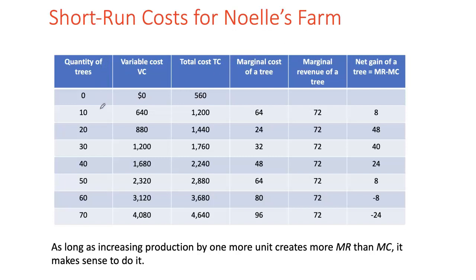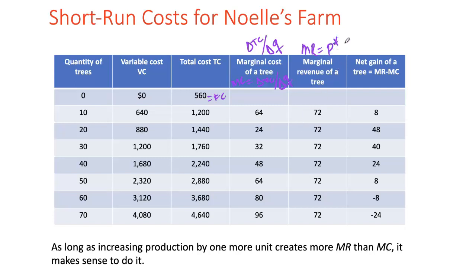Some columns are the same as before: quantity produced by Noelle's firm, then total cost. I also calculated the variable cost — our fixed cost is $560, so for any level of production we can deduct the fixed cost to find the variable cost. Marginal cost is the change in total cost because of a change in production, and costs only rise because of variable costs. So marginal cost can also be calculated as the change in variable cost divided by change in output — a quick revision from Chapter 11.